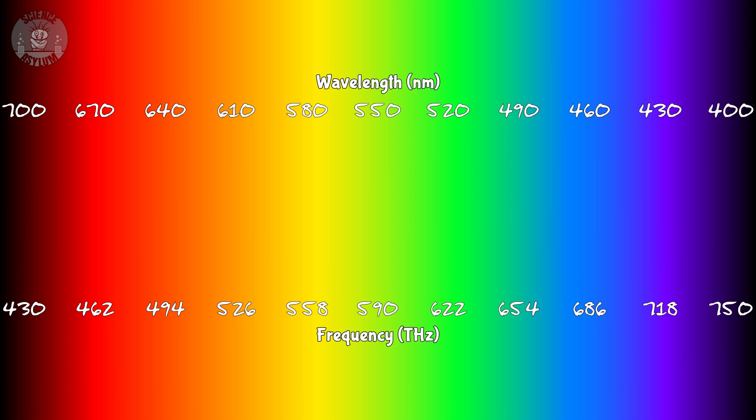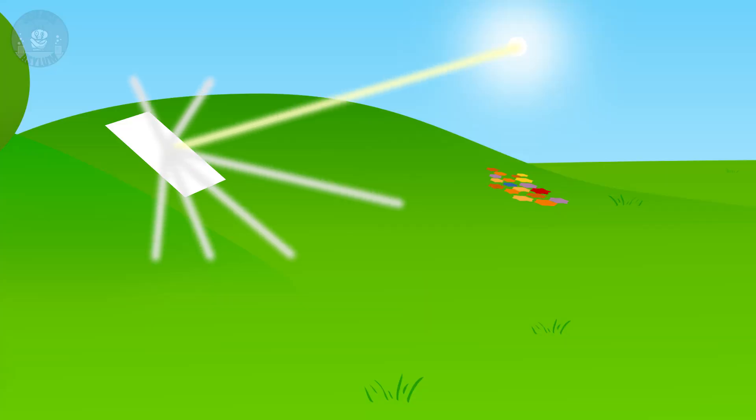So is white a real color? Not really. You won't find the color white on the visible spectrum like you would most other colors. It's not a color connected to a single wavelength of light,